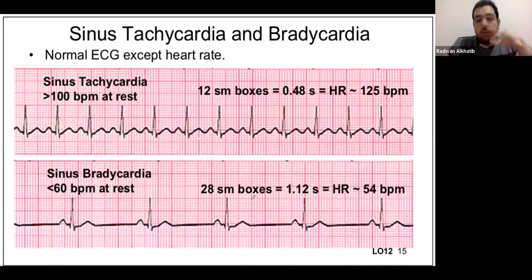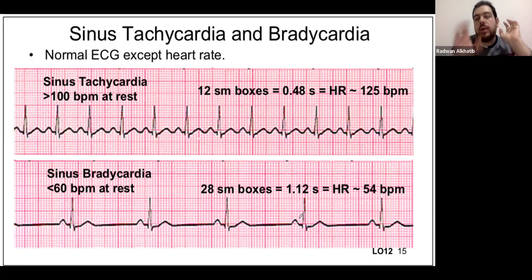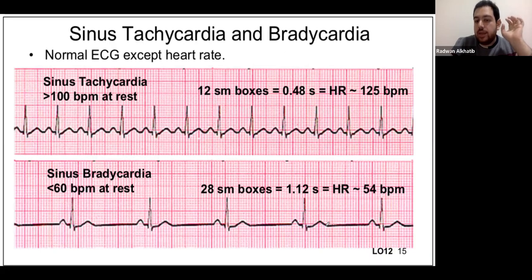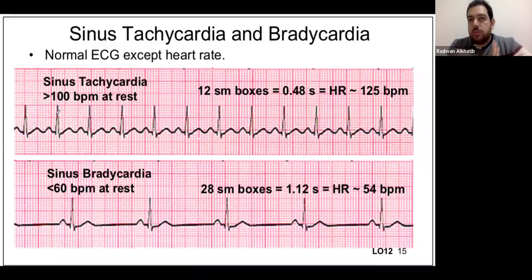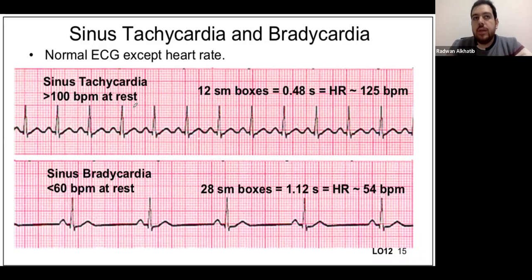Sinus tachycardia is exactly like normal sinus rhythm but with a heart rate more than 100 beats per minute. Common causes include exercise, coffee, some medications, fear, or danger — anything that makes the heartbeat faster. Sinus bradycardia is the opposite: a normal sinus rhythm but with a heart rate less than 60. It is usually caused by things that stimulate the vagal nerve.